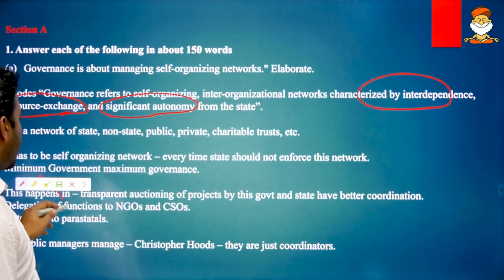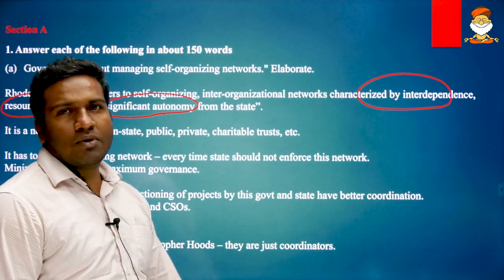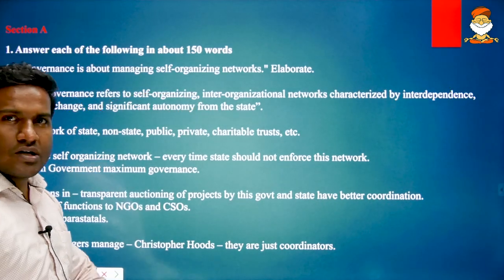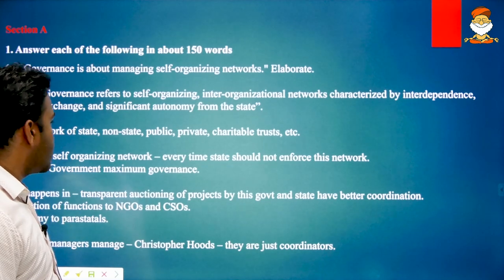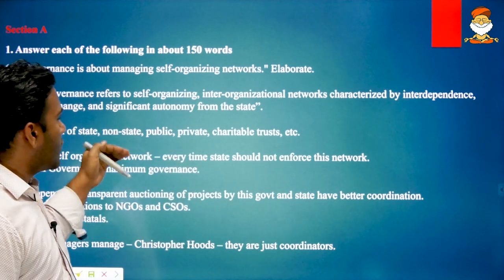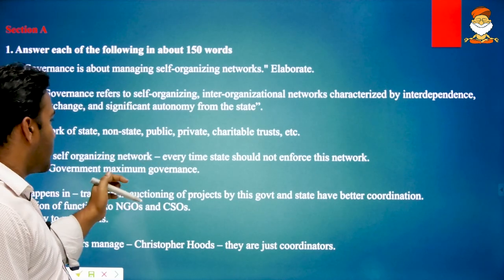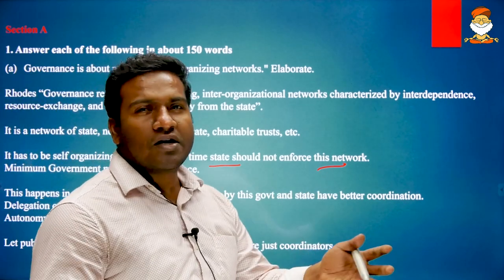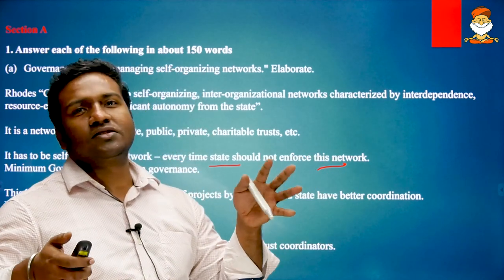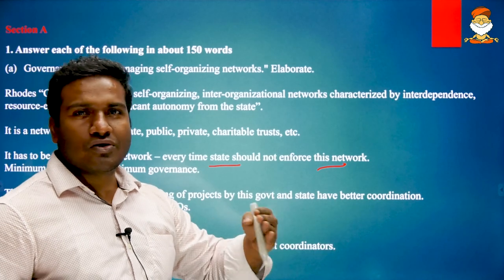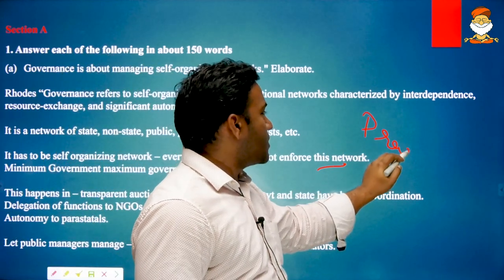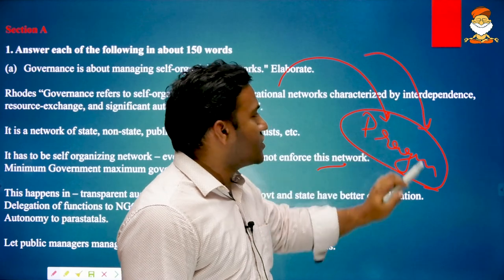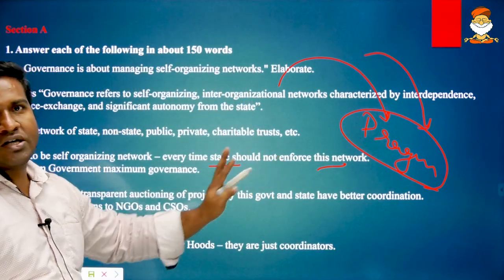First, it is a network of state, non-state, public, private, and charitable trusts. Obviously in the very first paragraph, we say that governance has a very good network. Then it has to be a self-organizing network — every time the state should not enforce this network. The state should not interfere in every part of the network. Once we set the structure, the system should run on its own — like Herbert Simon's programmed decision making, which should go on every day.